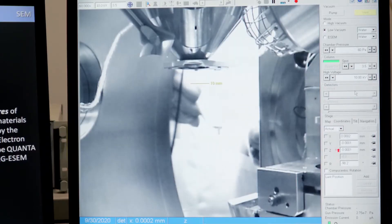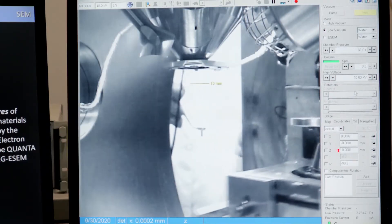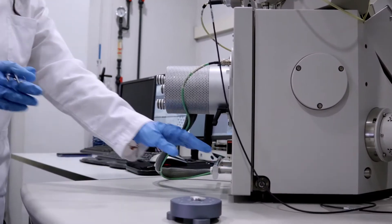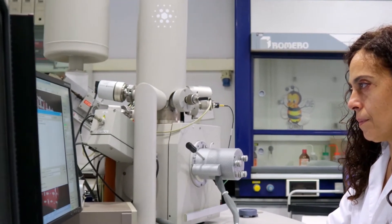With SEM, we can see the surface of the materials, the different patterns they have, and we can also identify the chemical elements that form the sample.